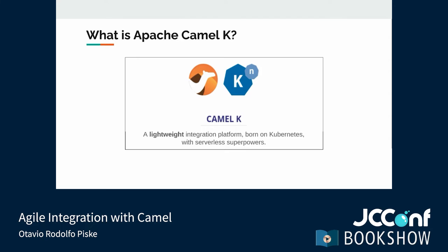CamelK was born on Kubernetes. When we think about desirable requirements for applications running on Kubernetes, a few quickly come to mind: low memory footprint, fast startup, and high density. CamelK helps with that. CamelK is a lightweight integration platform for running integrations in Kubernetes and its distributions such as OpenShift. It's written in Go and Java, currently on version 1.6.1, and leverages Camel Quarkus — the Apache Camel extensions for the high-performing Kubernetes-native Java stack.